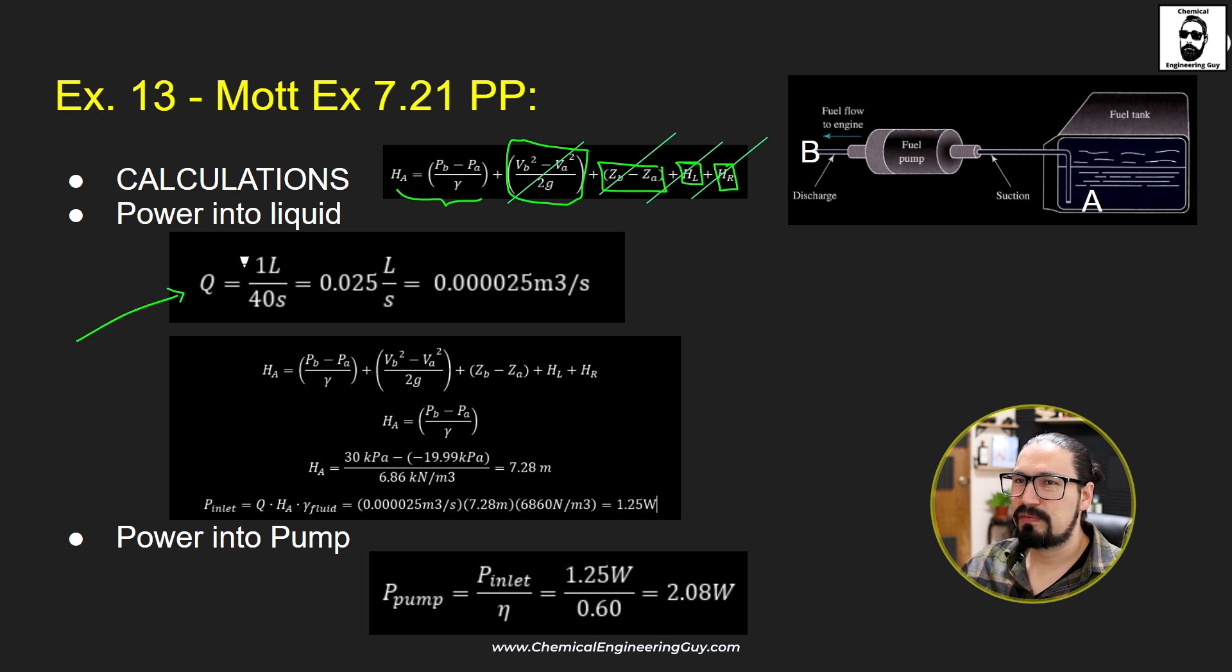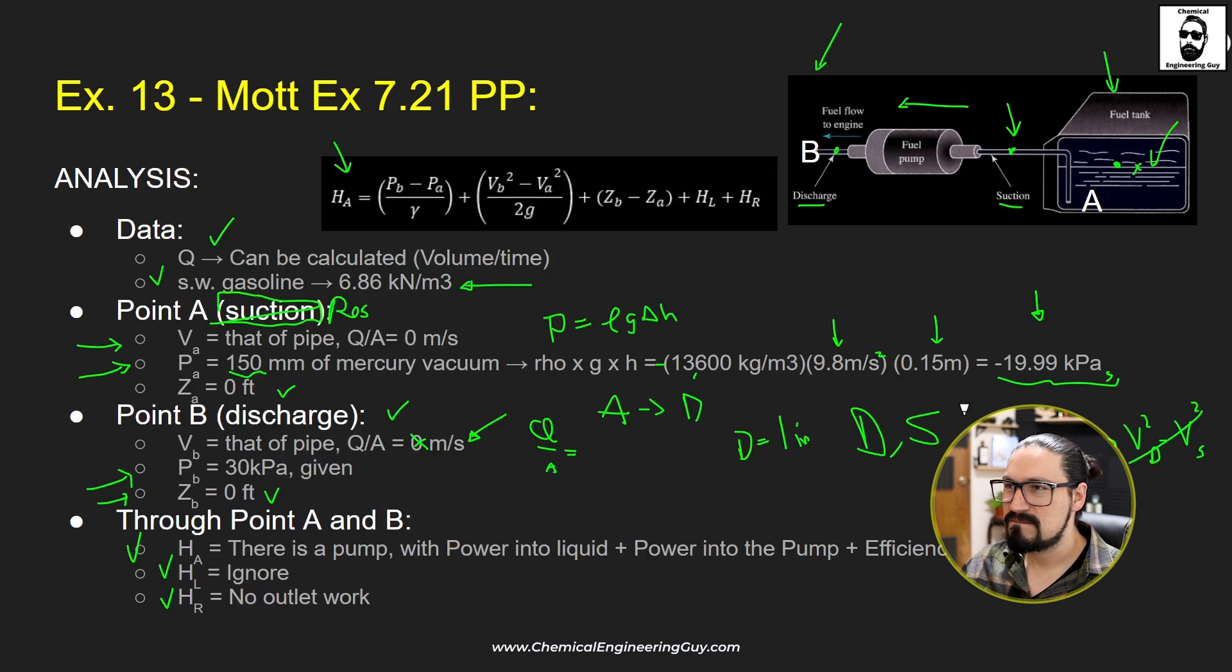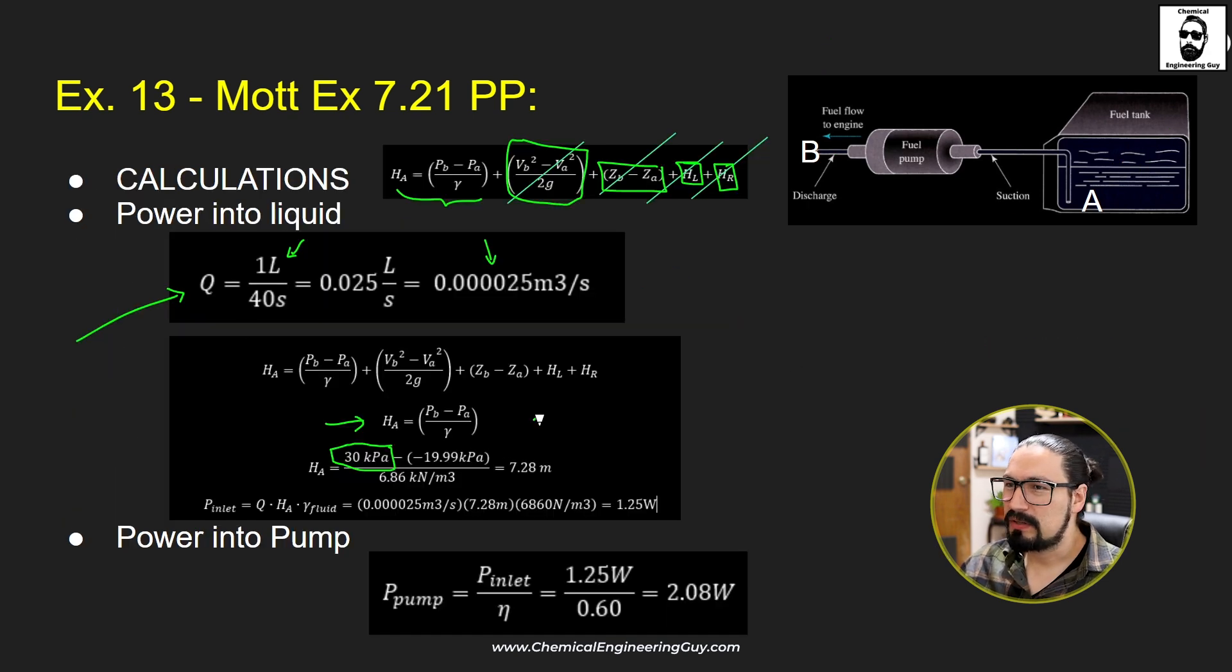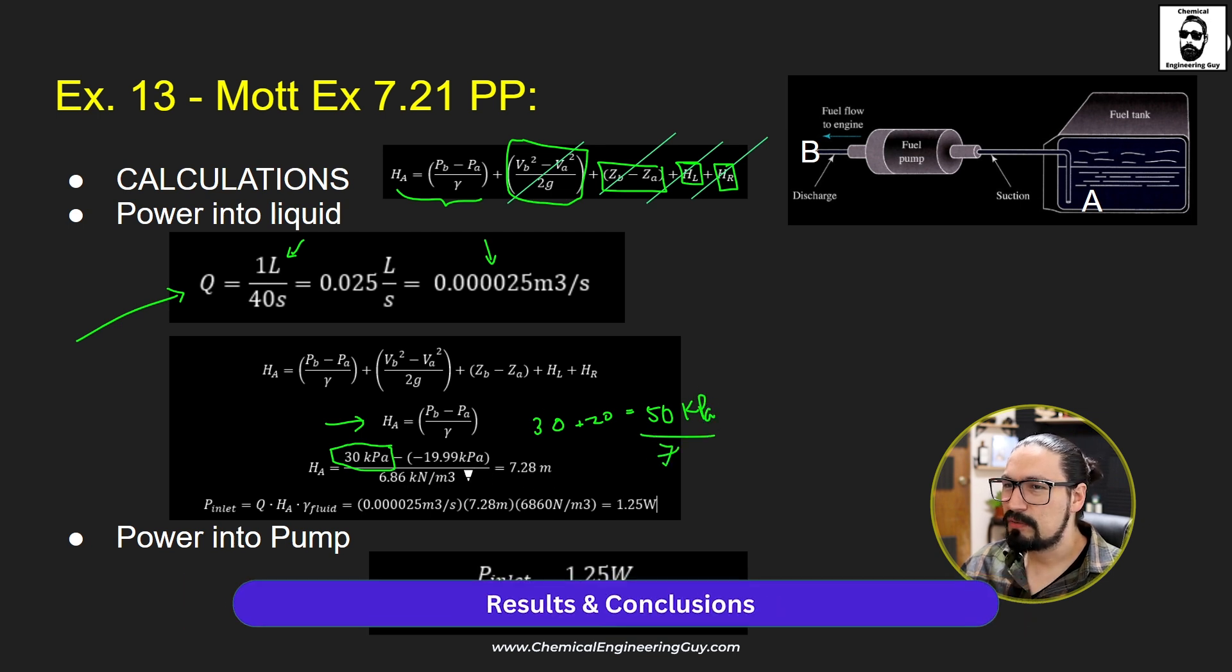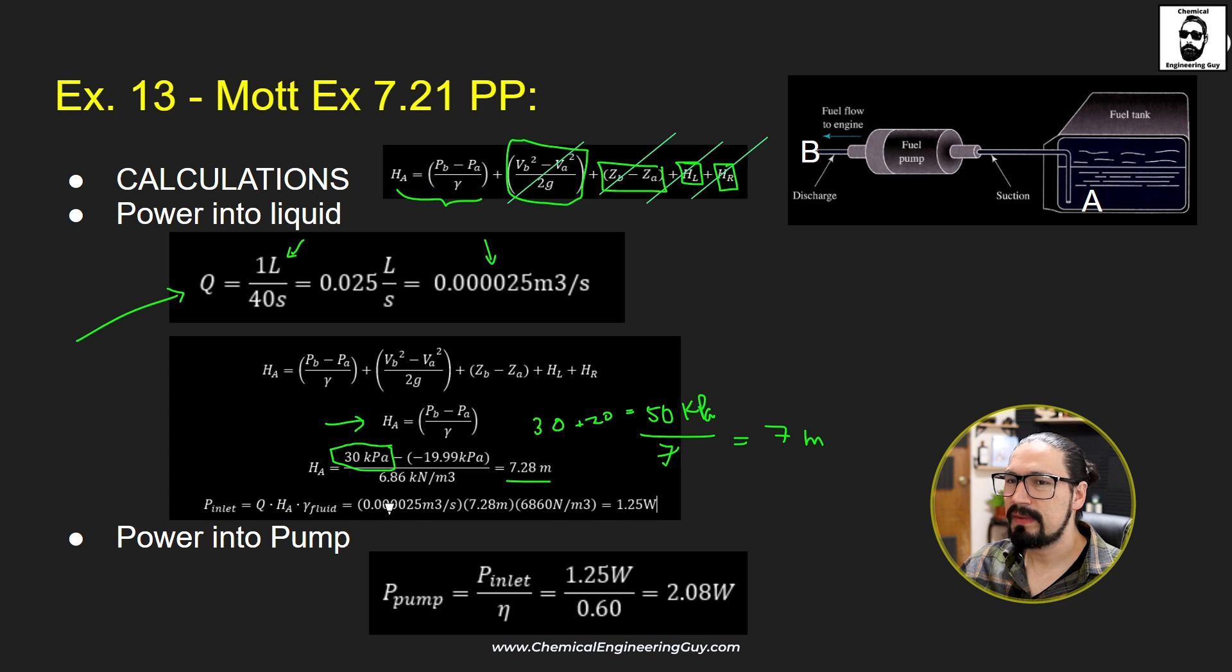Now, I'm going to be also calculating the volumetric flow rate. We know it's one liter in 40 seconds, which means 0.025 liters per second and changing that to cubic meter per second will be 0.000025 m³/s. Okay, as I said before, we got this equation. I'm going to be substituting data. This is 30 kilopascals minus the negative value right here. So, this is in reality 20. So, this will be 30 kilopascals plus 20 will be equal to 50 kilopascals divided by the specific weight, which we already know is something around seven kilonewton per cubic meters. This will be something around seven meters, approximately. So, yeah, we got it right here.